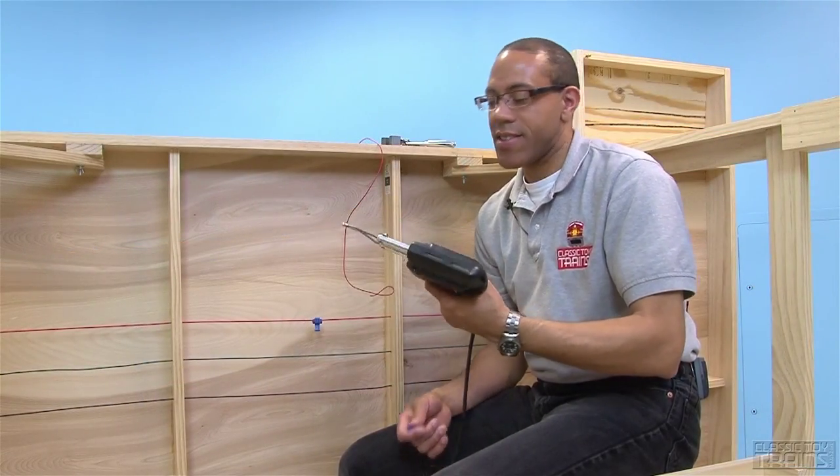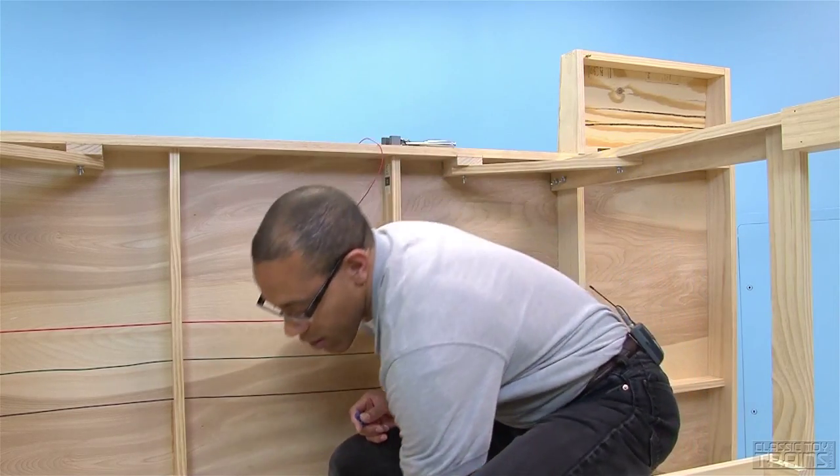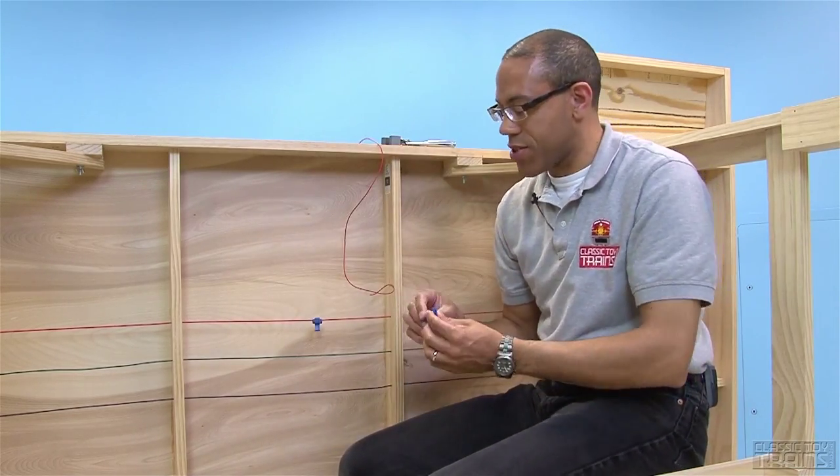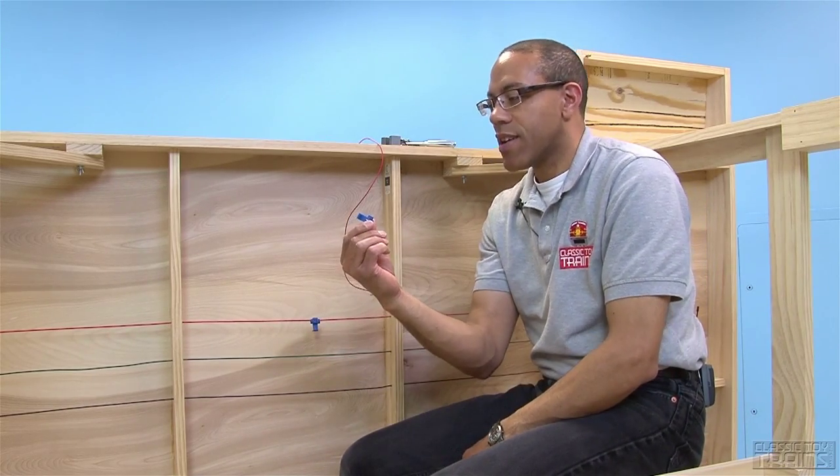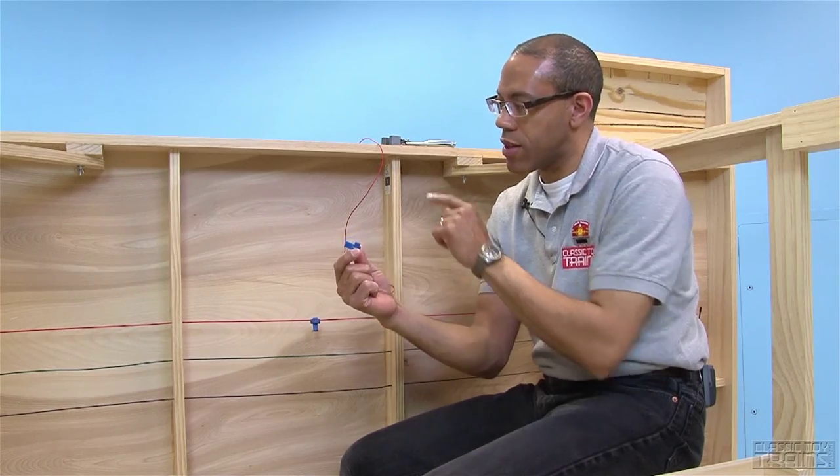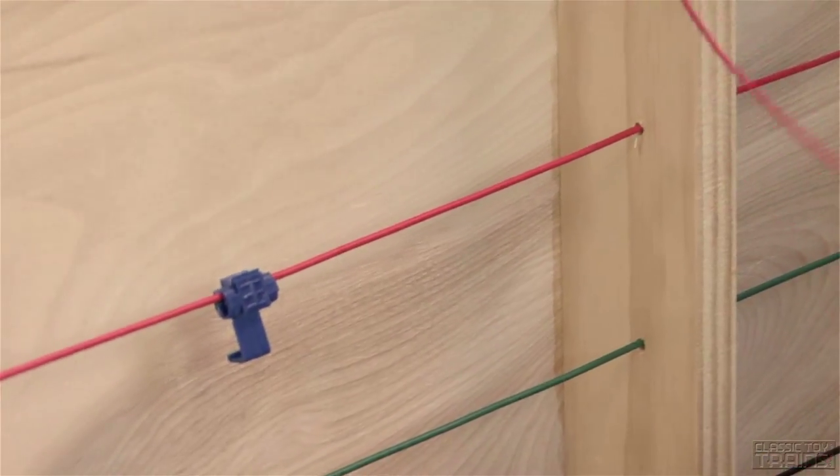Rather than using a soldering iron and solder to make my wiring connections underneath the layout, I figured I'll try something 21st century here and use a tap splice connector to make all the connections between the accessory wires and the bus wire. And to do that,